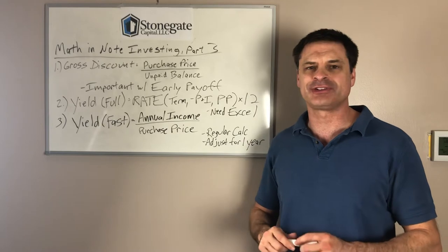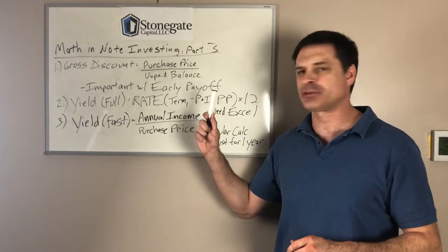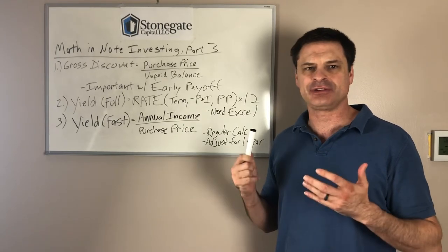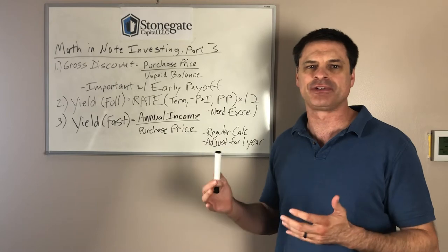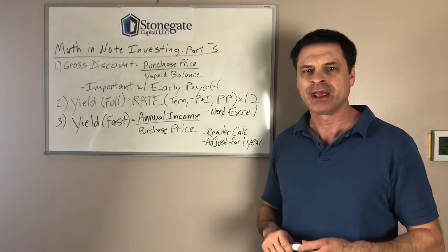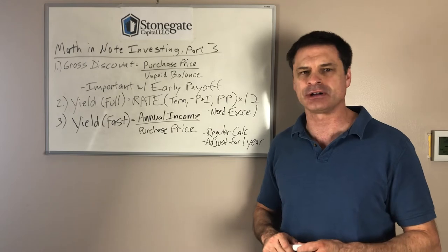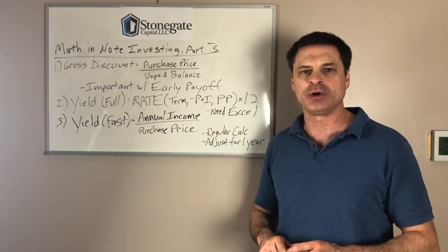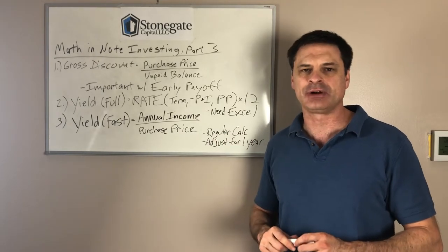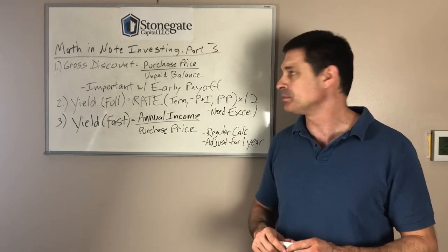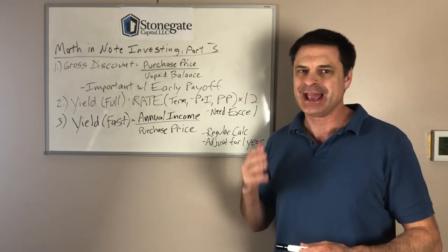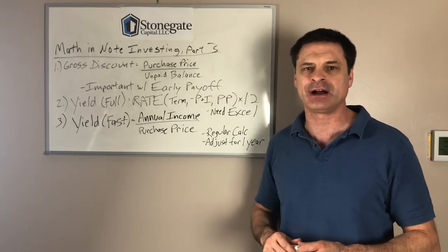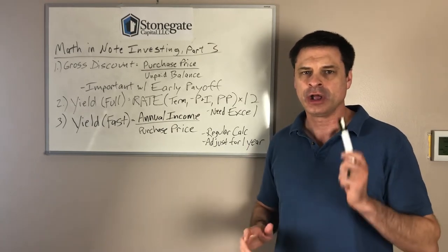So the first thing that I look at here is gross discount, which I define as the purchase price divided by the unpaid balance. This is essentially just a measure of the discount that you are buying the full unpaid balance for. It comes into special importance and emphasis if you're able to get an early payoff on a note. If you're buying that unpaid balance at a steep discount, and then the note pays off early, say they refinance or they move out and sell the house, that will skyrocket your return.